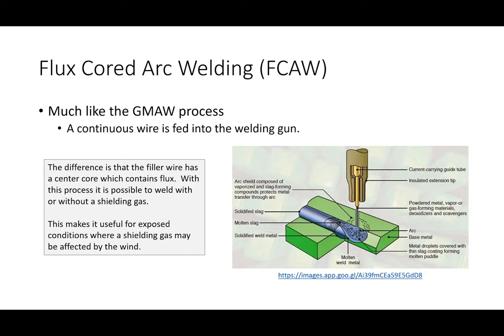A spin on MIG welding is flux-cored arc welding. The difference is in the electrode itself: with MIG you have an electrode and a separate gaseous shield, but with flux-core the electrode itself has a flux coating, so you don't need the external gas tank. When you deposit it, you get a white, gritty coating on the weld that you chip off afterward. If anyone has a MIG setup at home without the big gas tank, they're probably using flux-core.